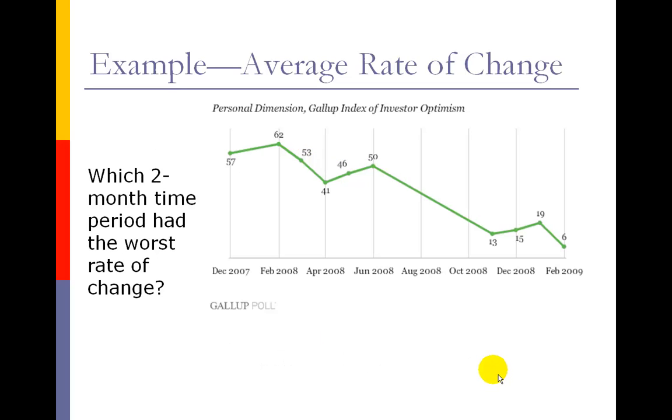Our third question is which two-month time period has the worst rate of change. I'm looking for worst, which I have to interpret in context as a declining investor optimism. I'm looking for a two-month period that has the sharpest decline - where the slope is the most negative.